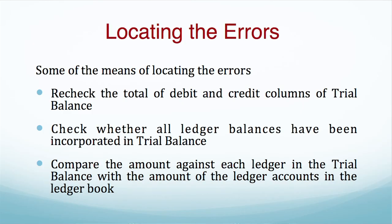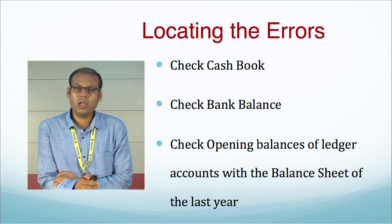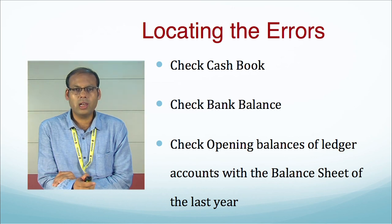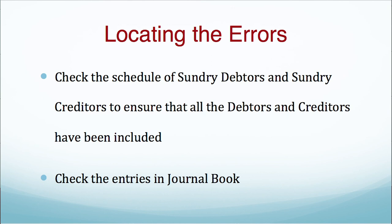Now, how do we locate the errors? We should recheck the totals of the debit and credit columns of the trial balance. We should check whether all ledger balances have been incorporated in the trial balance. We can compare the amount against each ledger in the trial balance with the amount in the ledger book. We can check the cash book and the bank balance. We can check the opening balances of ledger accounts against the balance sheet of the last year, and check the schedules of sundry debtors and creditors to ensure all have been included. We can also re-examine the entries in the journal book.